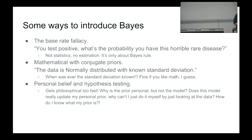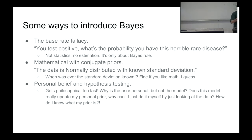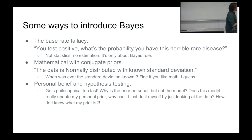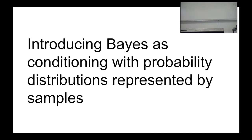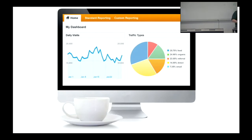So I'm going to give you another way, which also has flaws and is maybe more targeted to people used to programming a bit — maybe R or Python. The method is called 'introducing Bayes as conditioning with probability distributions represented by samples.' I'm still working on the title, but it's something like that.